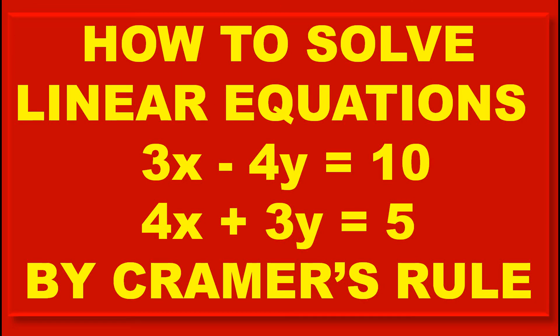We have to solve linear equations: 3x minus 4y is equal to 10, and 4x plus 3y is equal to 5, by Cramer's rule.